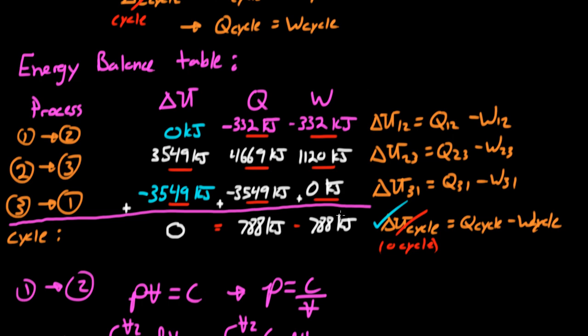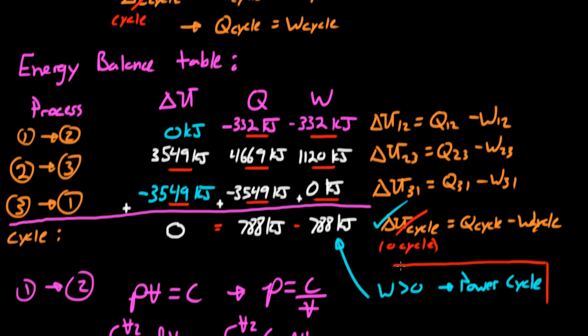When we look at these results, we can answer the first question: is it a power cycle or a refrigeration/heat pump cycle? The net work out is positive, meaning we got work out of this cycle, which tells us it's a power cycle.